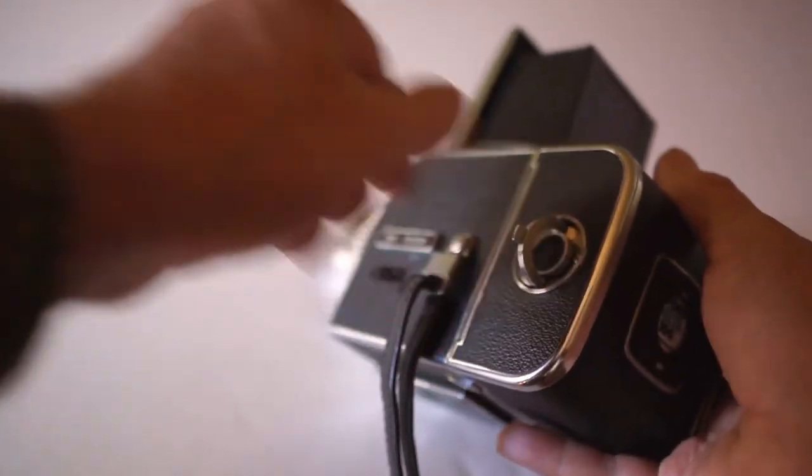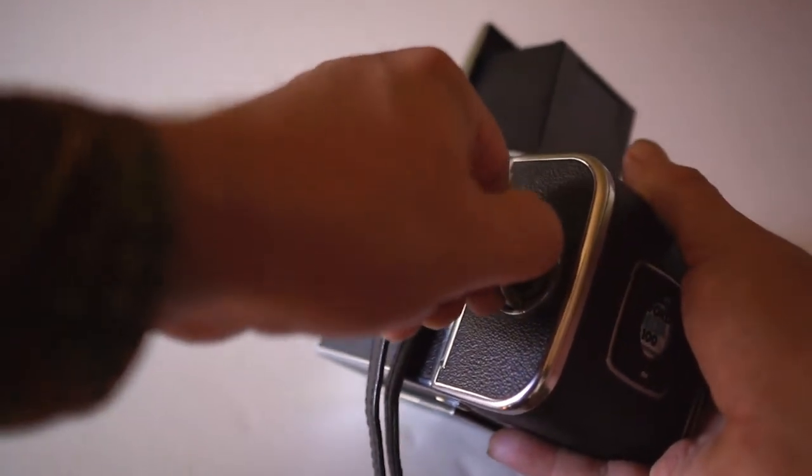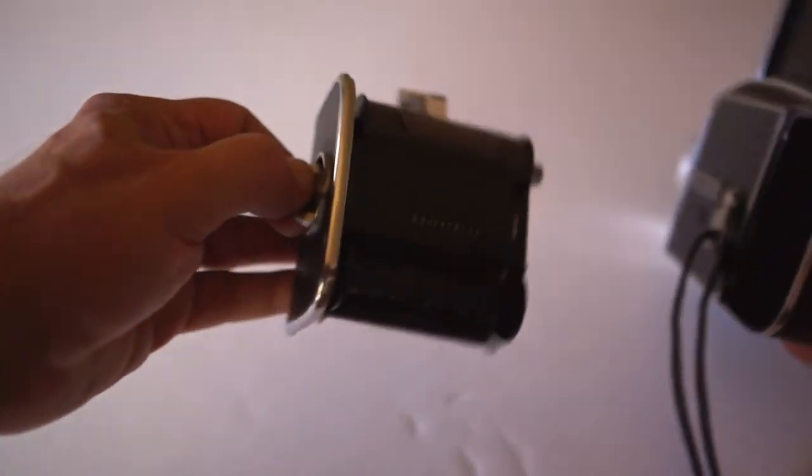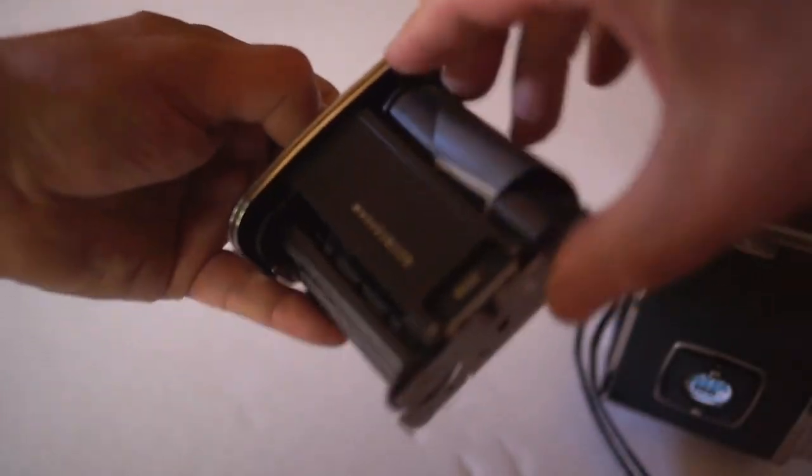Go over to this key again. Lift it up. Turn it. Pull out the film insert. And there's our exposed roll of film.